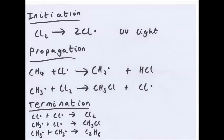Finally, termination. This is when all the radicals that have been created — Cl radicals and CH3 radicals — react together. So: Cl plus Cl gives Cl2; CH3 plus Cl gives chloromethane; CH3 plus CH3 gives ethane. The reason there are so many products is that bond breaking is a completely random process, so you can get many different radicals joining together.